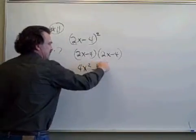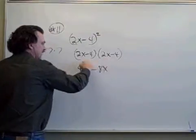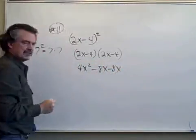The I of FOIL says take the product of the inside 2. Minus 4 times 2x is also minus 8x.